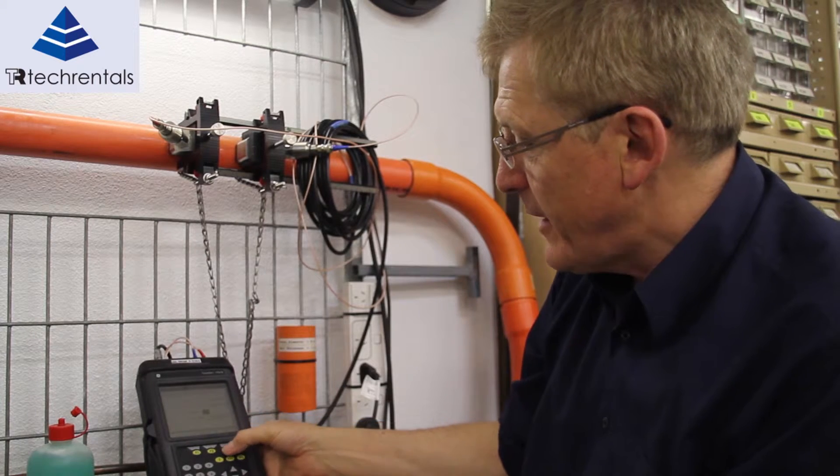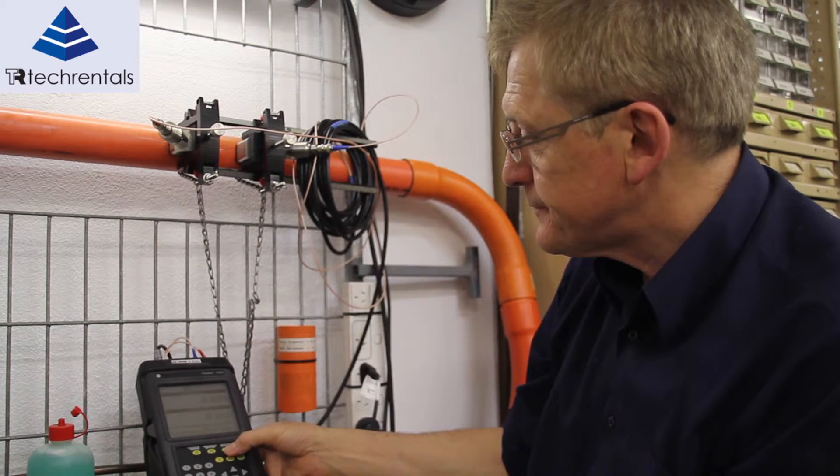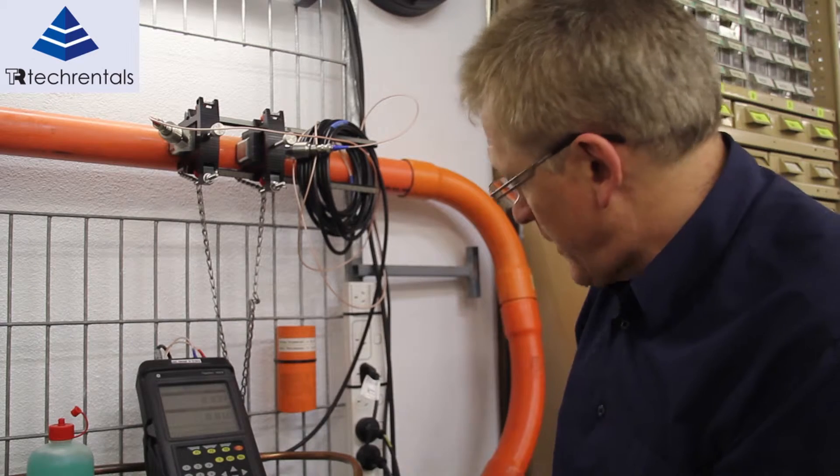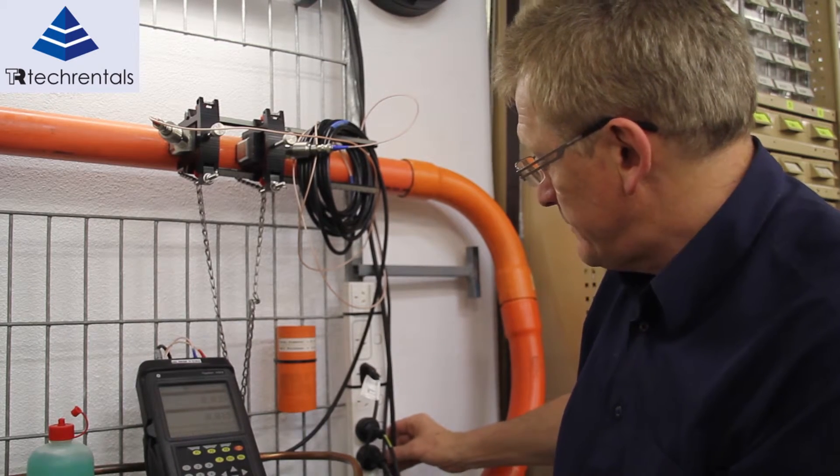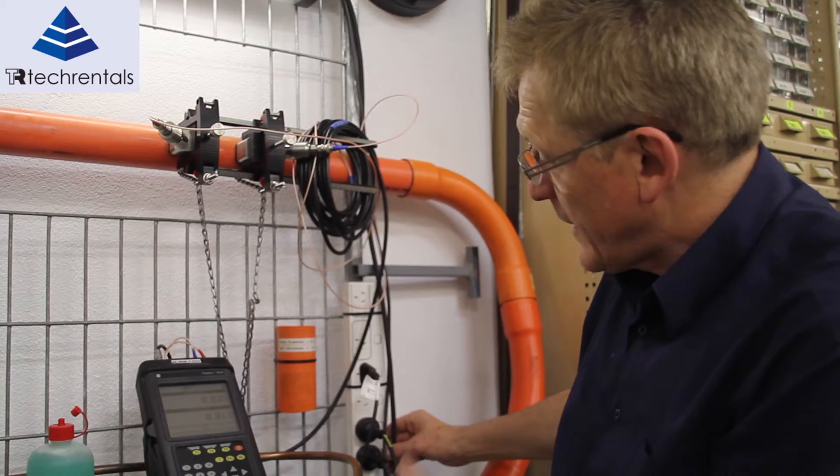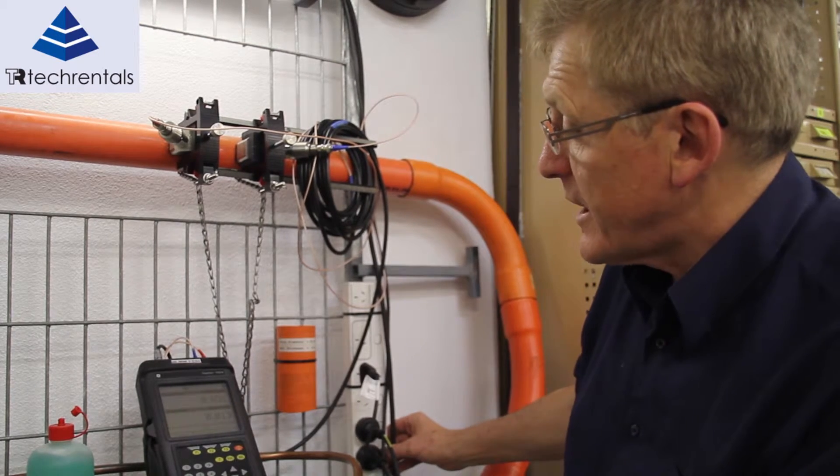Anyway, once we've finished that we just simply hit the OK button here. Now at the moment the flow rate is zero. Now I'm going to switch on the test rig here and we'll start to get a bit of flow.